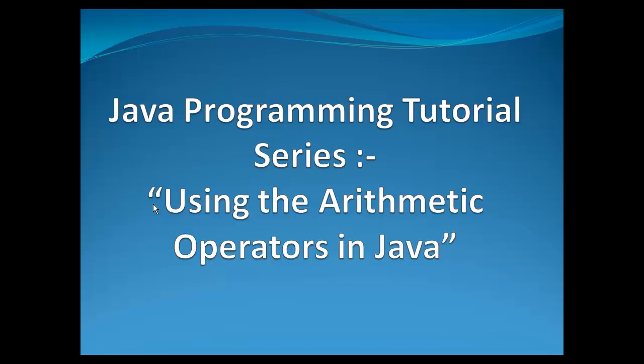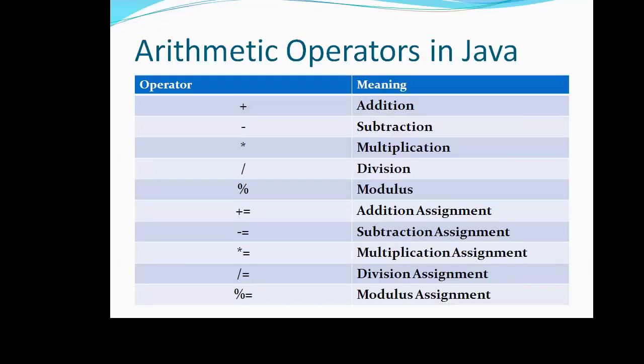Today we will discuss about the arithmetic operators in Java. Arithmetic operators are used to perform mathematical calculations on operands of numeric types. These operators are also called binary operators as they work on two operands. The operators include: addition, subtraction, multiplication, division, modulus, addition assignment, subtraction assignment, multiplication assignment, division assignment, and modulus assignment operators.